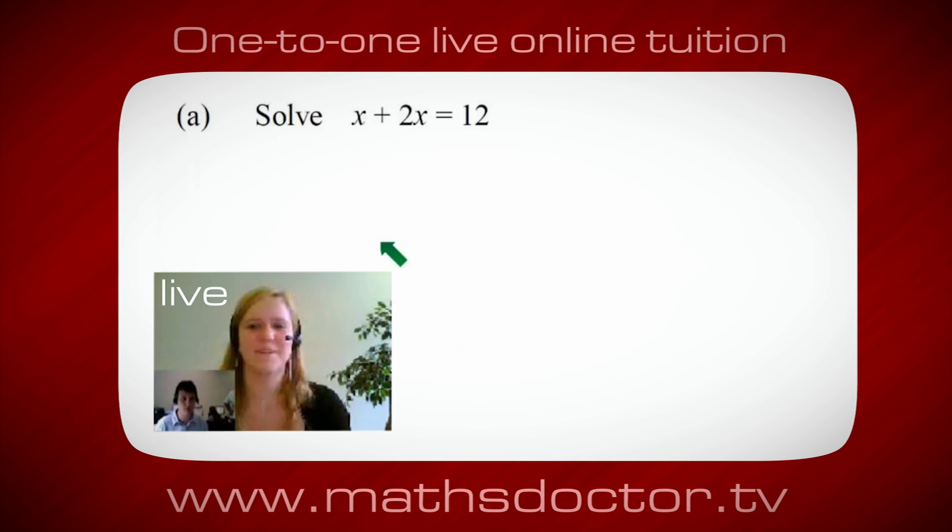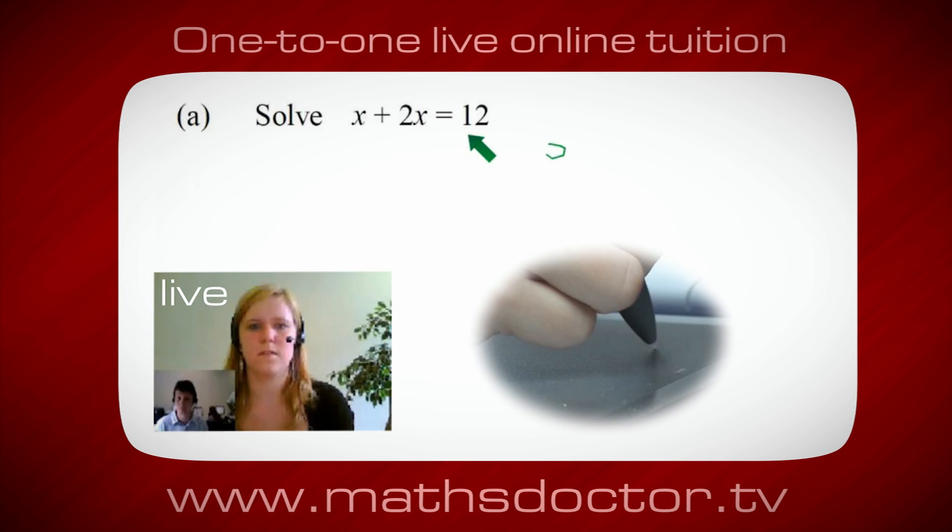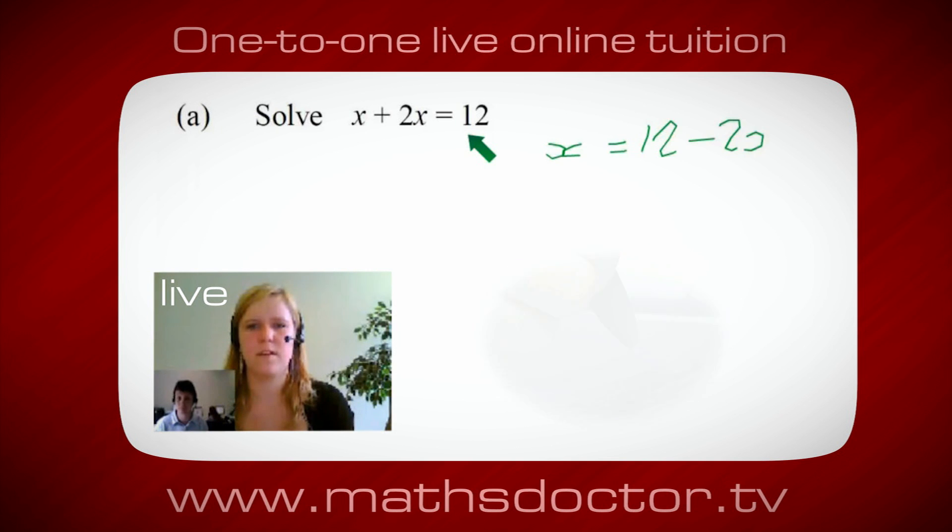So let's have a look at this one. Solve x plus 2x equals 12. So what do you think you do first? I want x on its own, so I would put x equals 12 minus 2x.